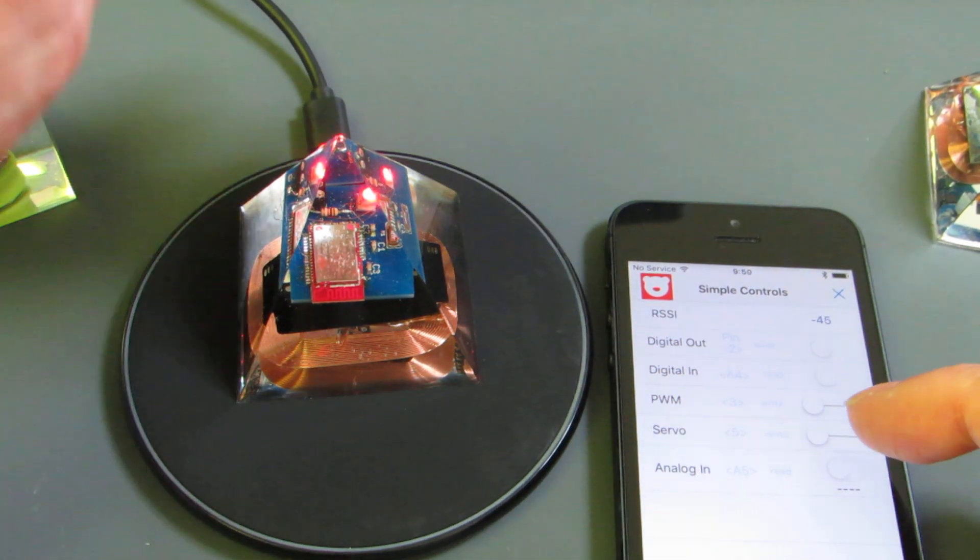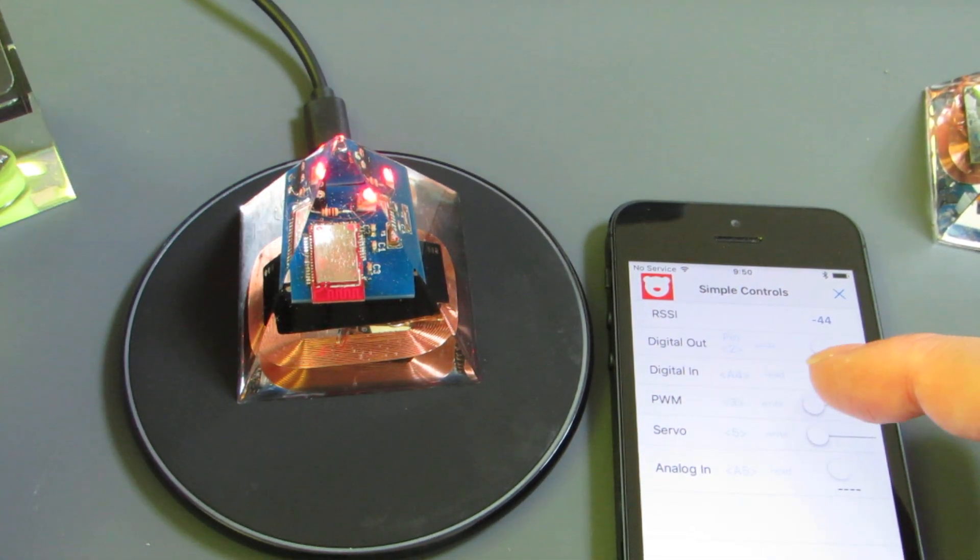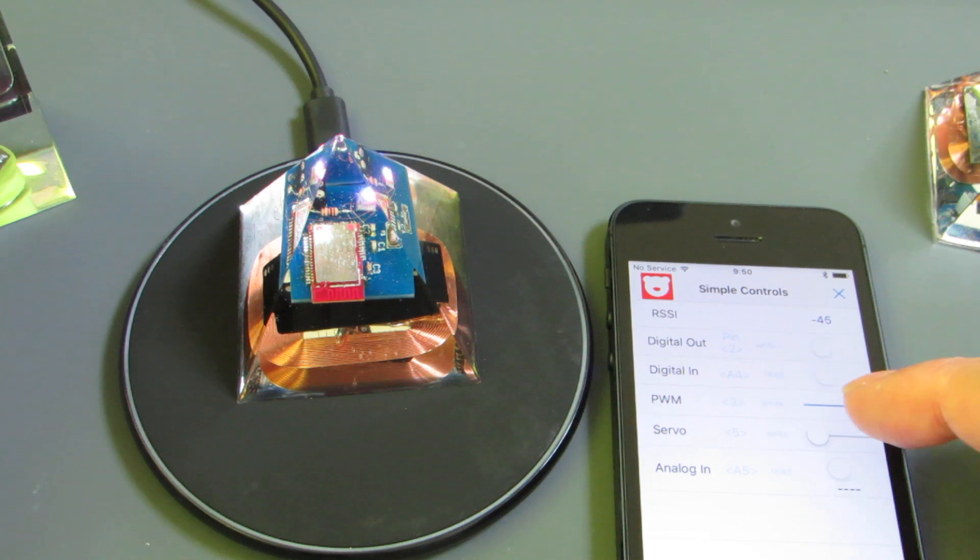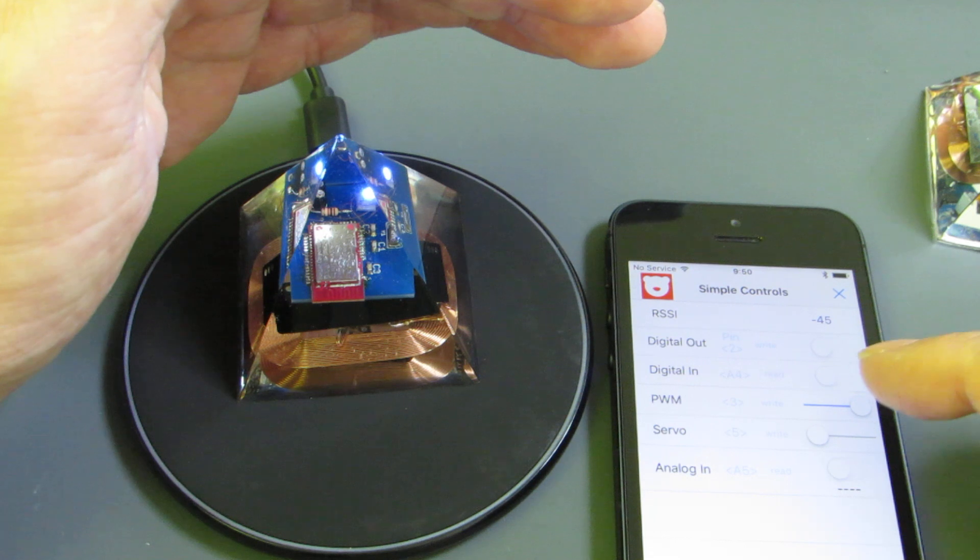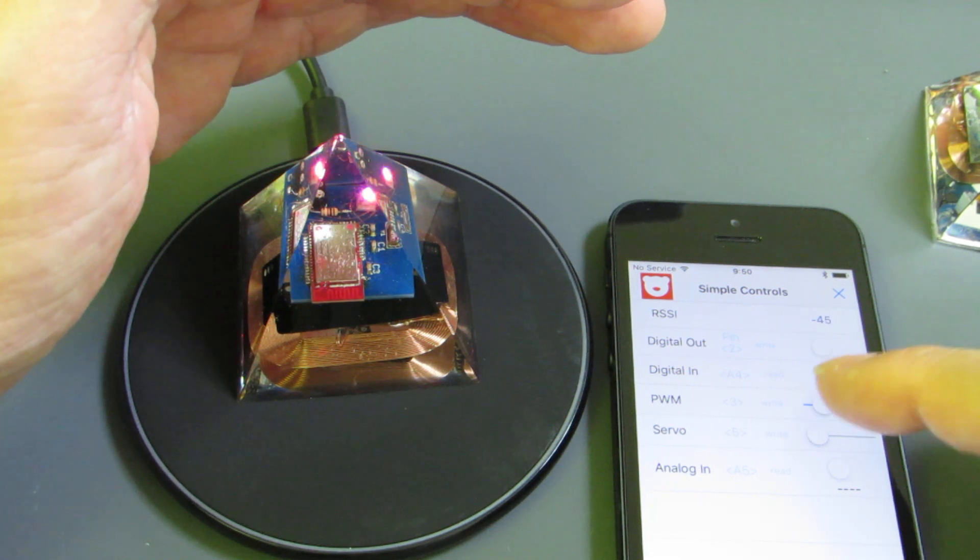You see, the color of LED will change by the slide bar. You see. And surely connected to the iPhone through the BLE.